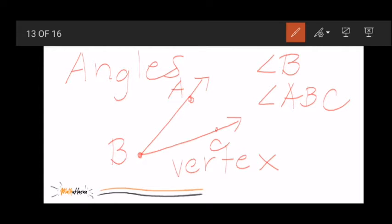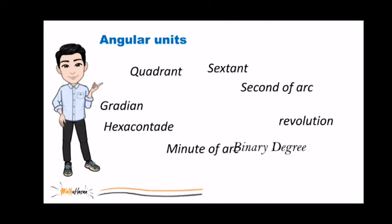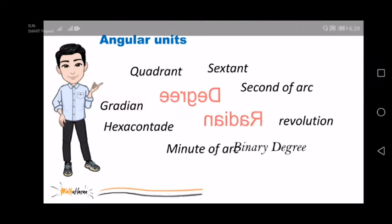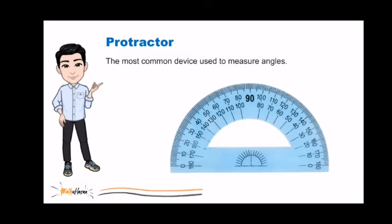Now, the amount of space or rotation that is covered by these two rays is the angle measure. There are many angular units that we could use to measure the triangle. But in trigonometry, we often use degree and radian measure. The most common device that we use to measure angles is the protractor.